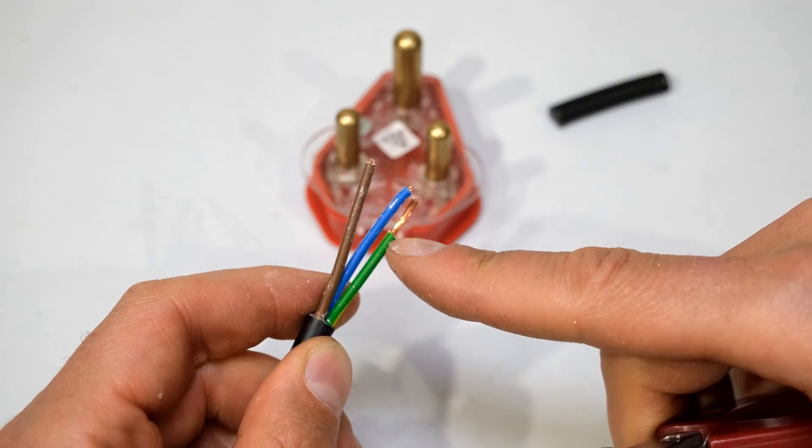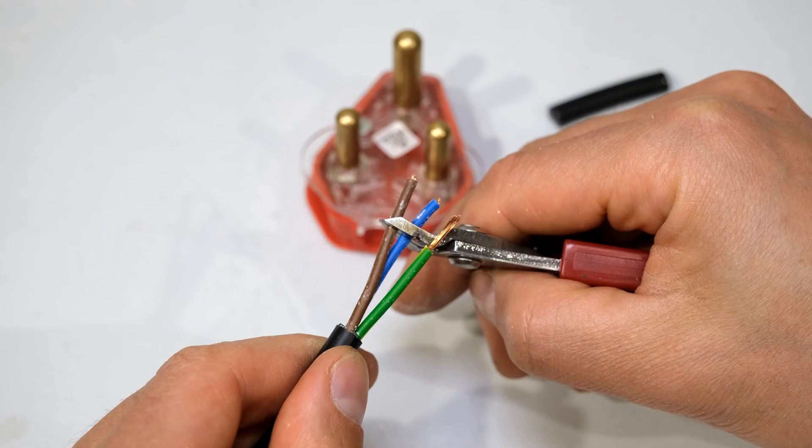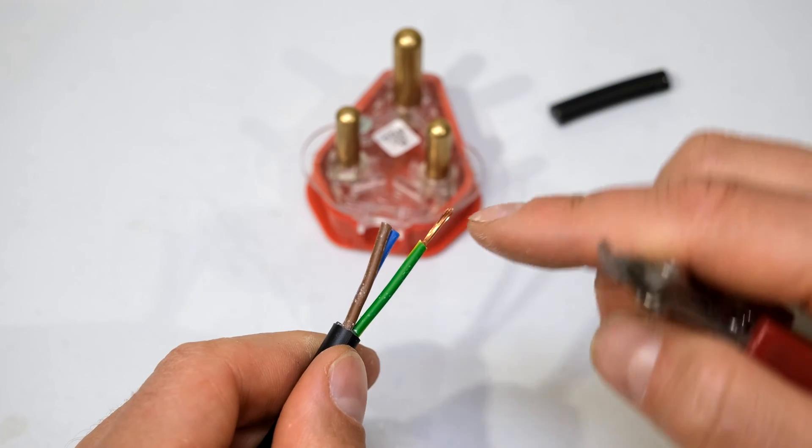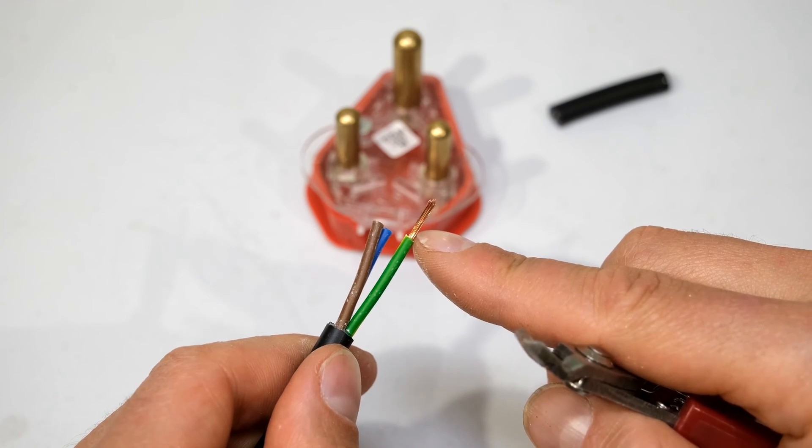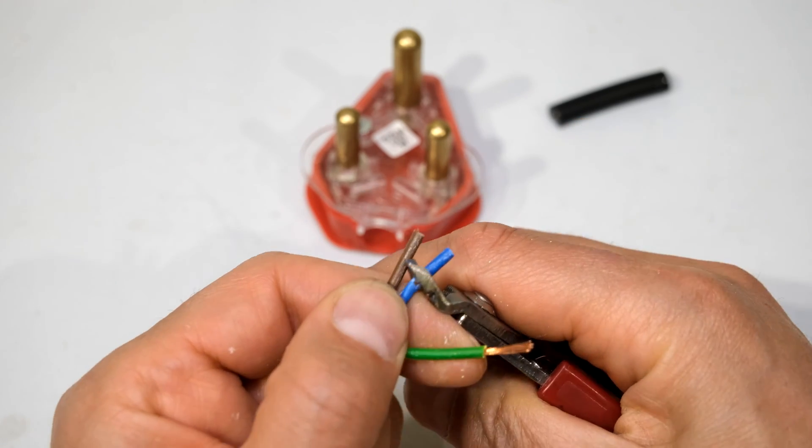A safety precaution is to keep the earth wire longer than the live and the neutral. So what I do is I cut the blue and the brown wire at the level of where I removed the insulation of the earth wire.